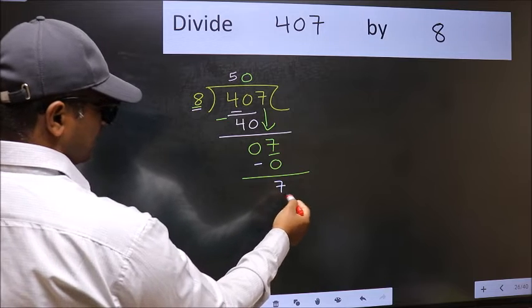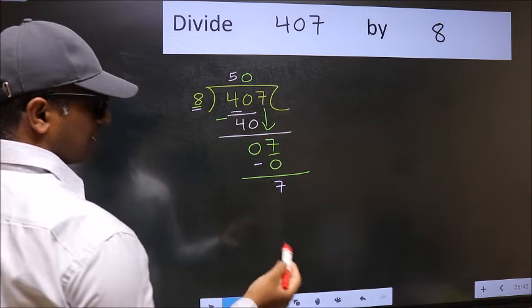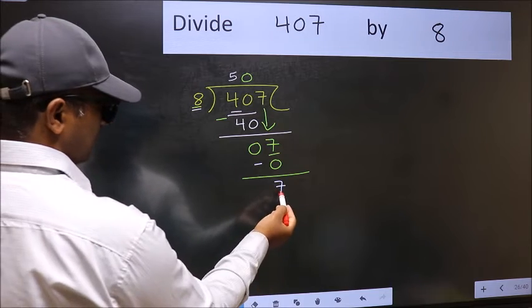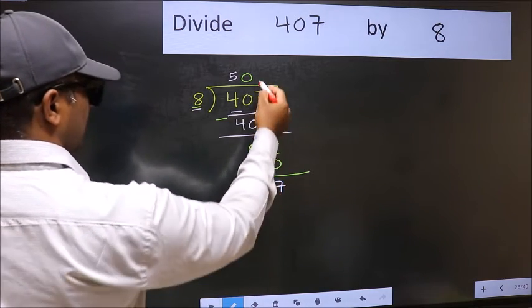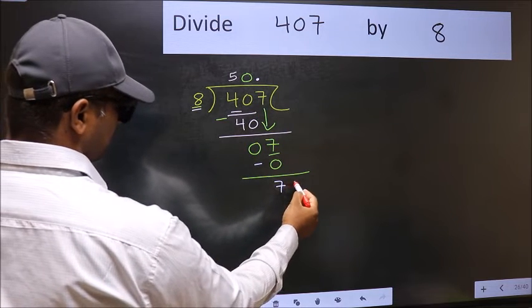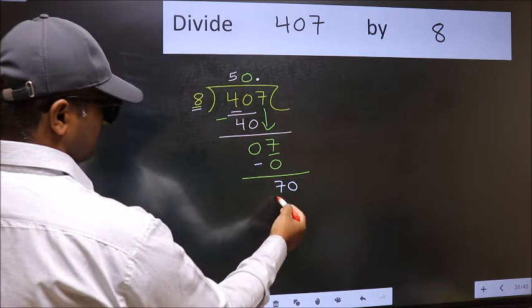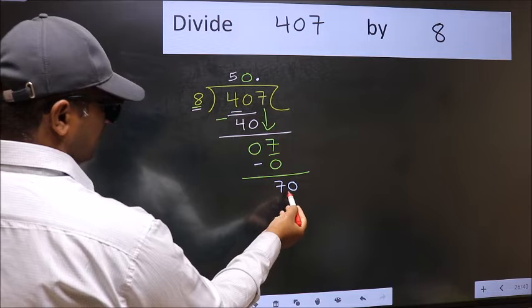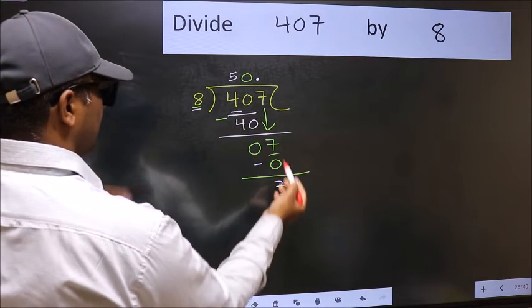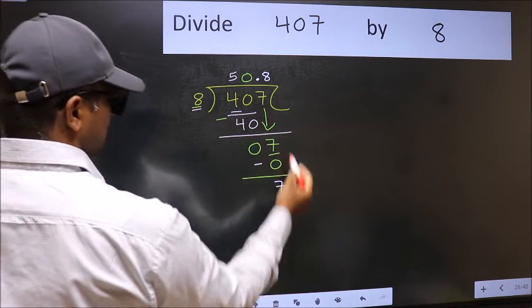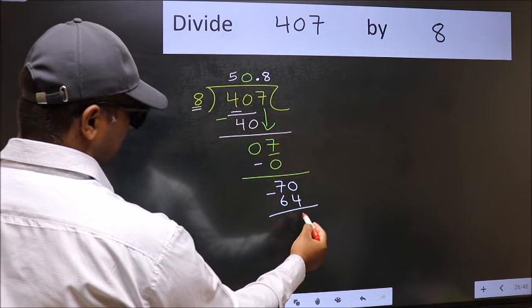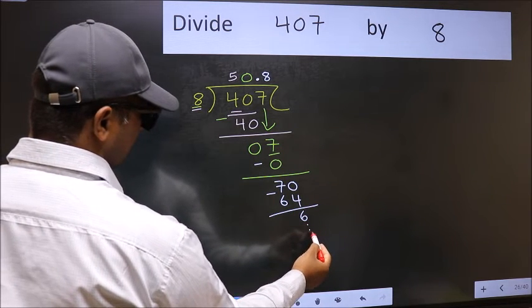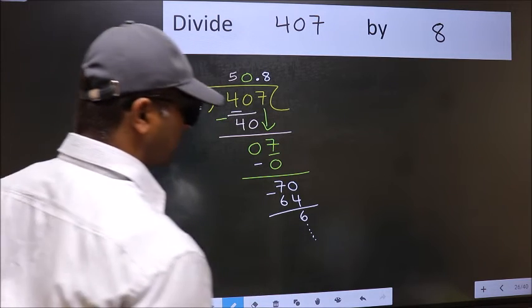Over here, we did not bring any number down, and 7 is smaller than 8. So now we can put dot and take 0. So, 70. A number close to 70 in 8 table is 8 times 8, 64. Now you should subtract. You get 6 and continue the division. I am not doing that.